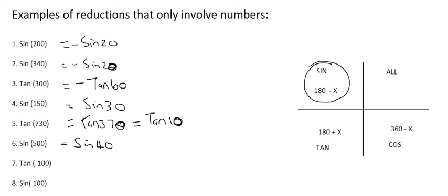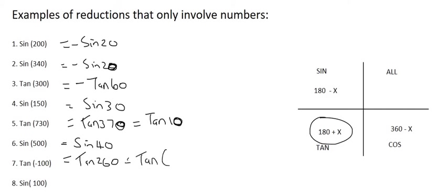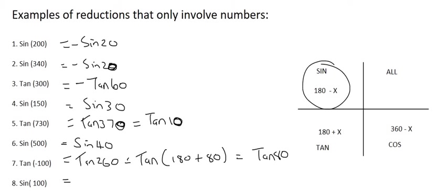Number 7 is the tan of minus 100. Minus 100 is not on the CAST diagram, so we add 360, giving tan of 260. 260 is in the third quadrant, so we rewrite it as 180 plus 80. That reduces to tan 80, and because tan is positive there, the answer is positive tan 80. The last question is sin of 100. 100 is in the second quadrant, so we rewrite it as 180 minus 80, giving sin 80.